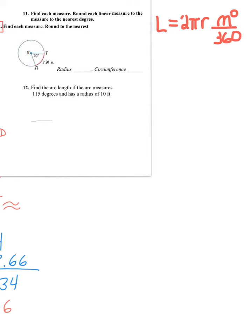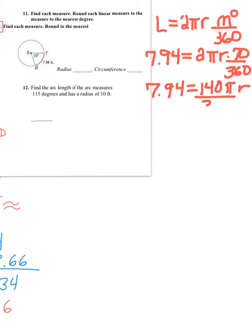So, since they're giving me the length of the arc, and that is 7.94, I don't have the radius, so it's 2 pi r stays the same. They are giving me the angle. The angle is 70 out of 360. So, when you multiply 2 times pi times 70, well, that is 140 pi. So, I'm going to just rewrite it. 7.94 equals 140 pi radius over 360.